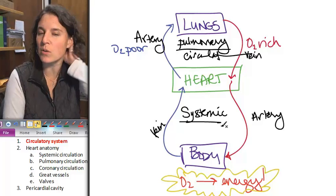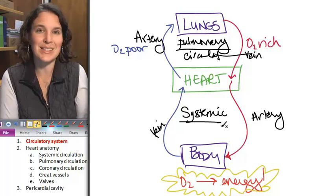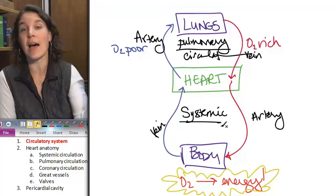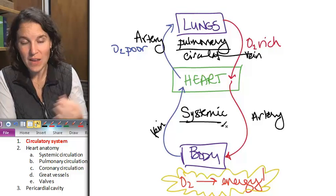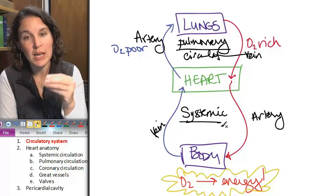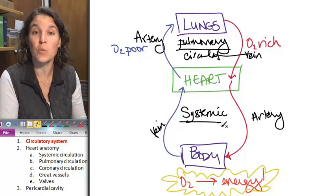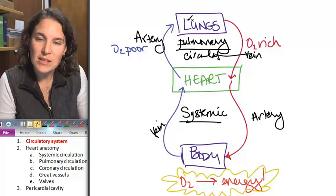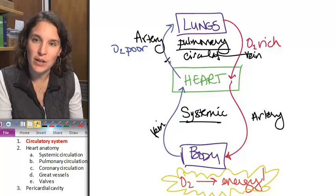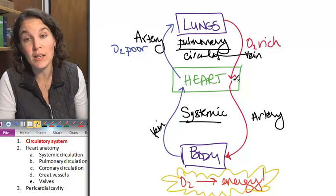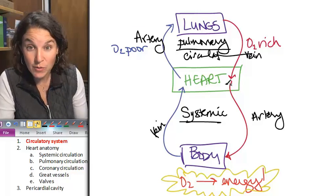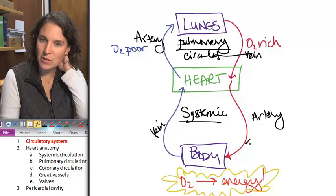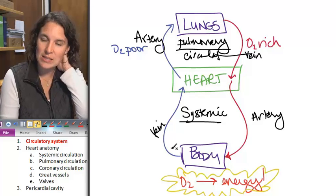So if I say to you there is a vessel in the systemic system, you're going to know that vessel is out dealing with the body. If I tell you there's a vessel in the pulmonary system, then you're going to know that that's actually dealing with the lungs, and it makes sense. Here's an artery that's carrying blood to the lungs. It's a pulmonary artery. Here's a vein bringing blood back from the lungs. That's a pulmonary vein. Do you see how that works? This is a systemic artery, and this is a systemic vein.